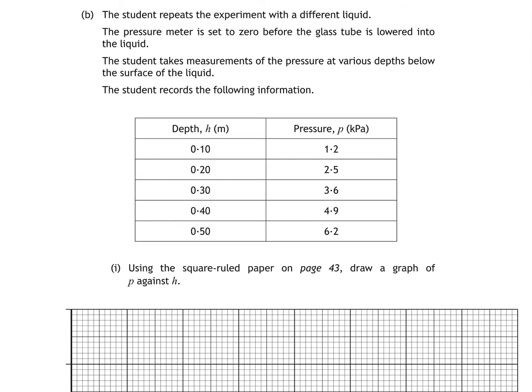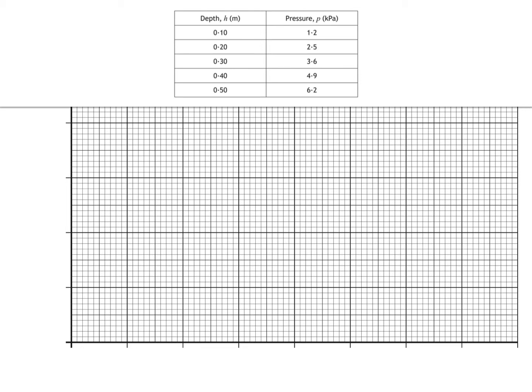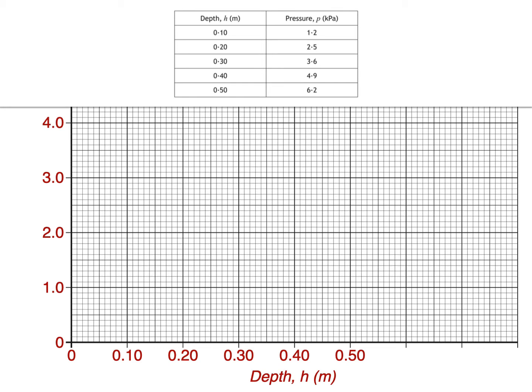Bring on the graph paper — or square ruled paper as they're calling it here. We'll start at the bottom with a scale on the x axis. Since we're asked to graph P against H, P should be on the y axis and H on the x axis. The highest value of depth H is 0.50, so we use a scale that increases by equal increments each major grid line. We'll also need a label together with the units. The maximum value of pressure is 6.2 kPa, so this is the most suitable scale for the y axis. We'll need a label and units on the y axis too.